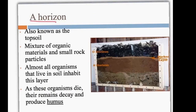The A horizon is also known as our topsoil. It's a mixture of organic materials and small rocks. If there's anything alive in the soil, it's going to live in this layer — things like ants, worms, small bugs, roly-polies.